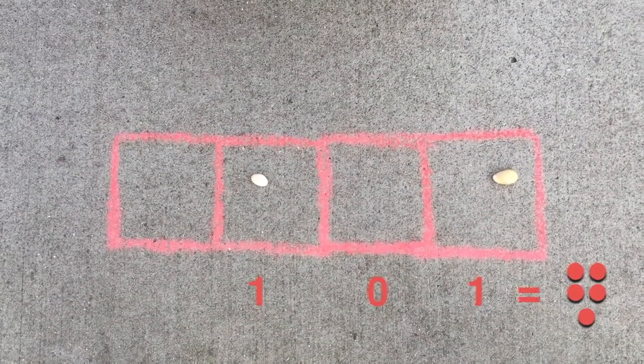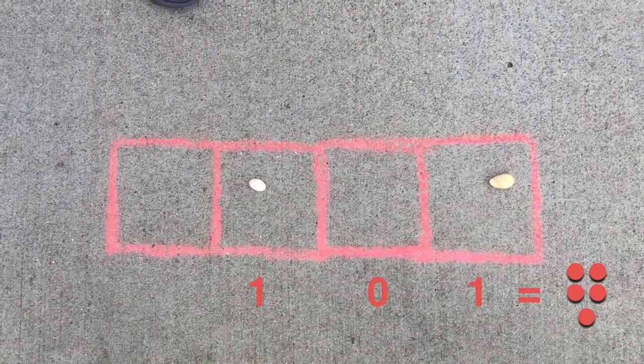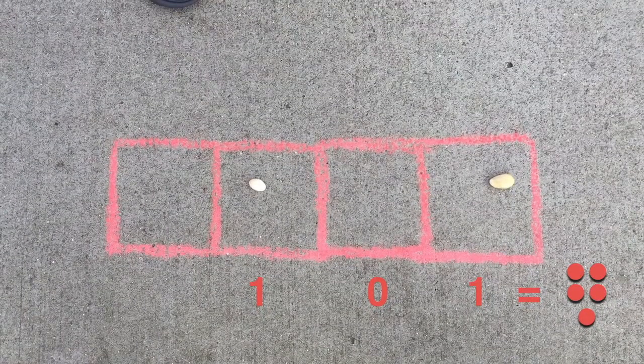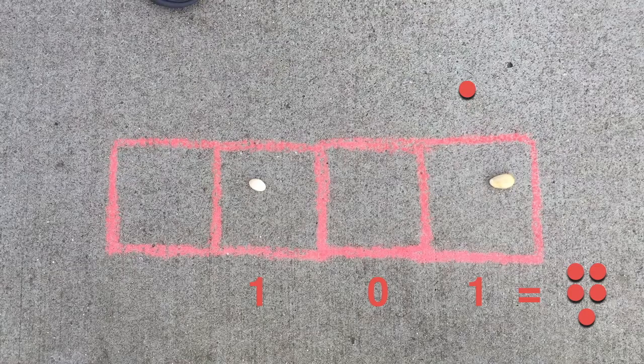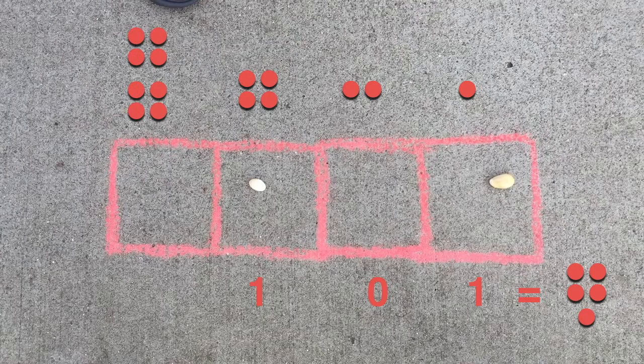Now that we know how to write five in binary, we can work backwards. I'm going to put some dots above each box. The box on the right will have one dot. The next box will have two dots, and then four, and the last eight. Notice the pattern? Each box has two times as many dots as the box to the right.